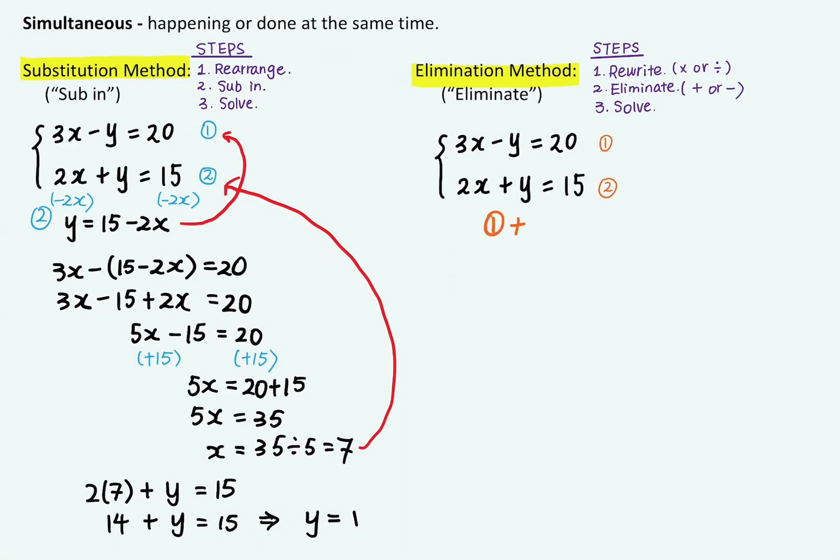if I add the two equations, I can write 3x minus y equals 20 plus 2x plus y equals 15.